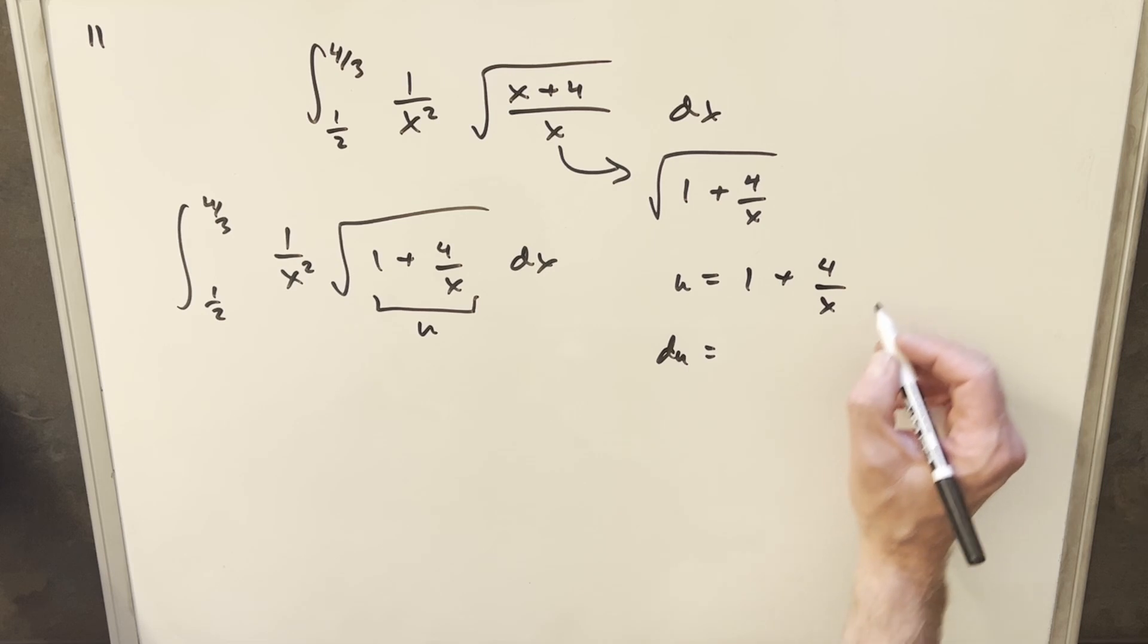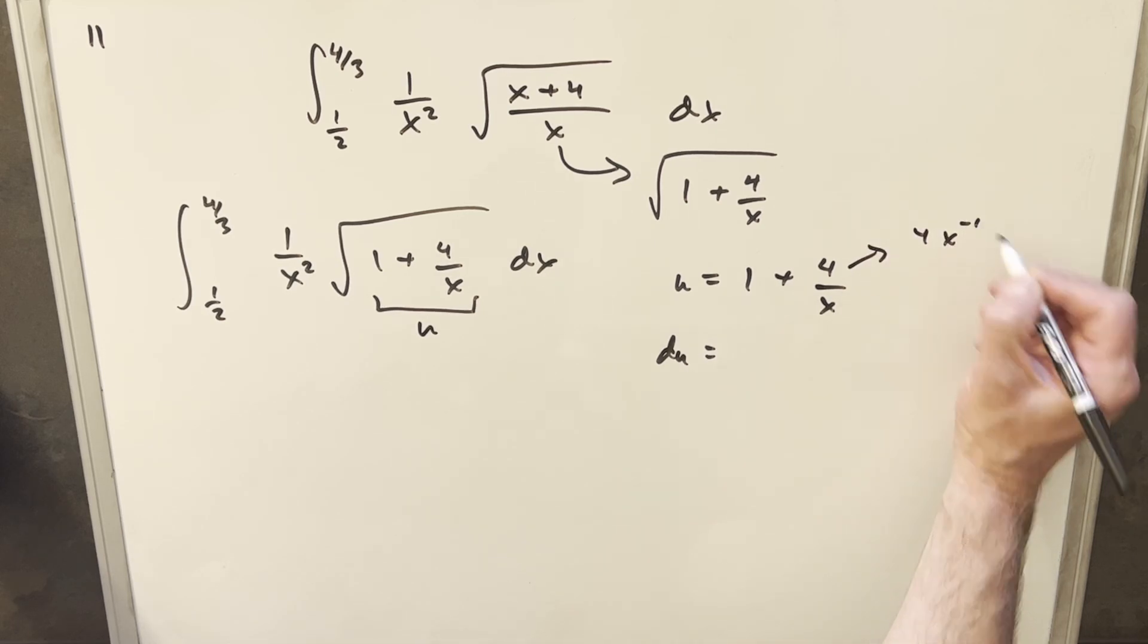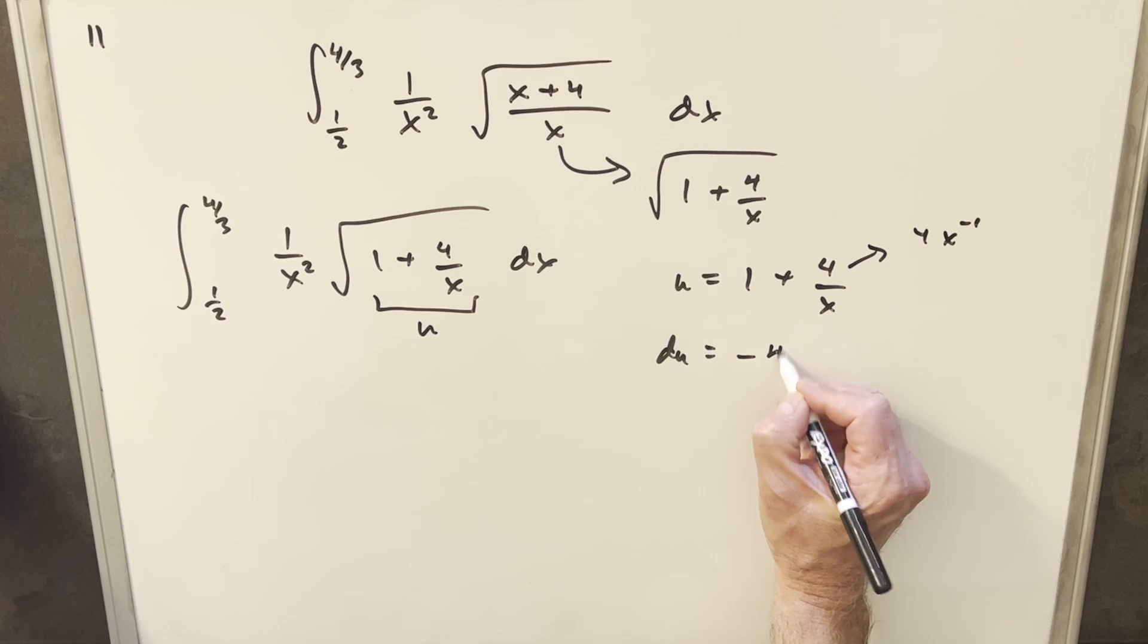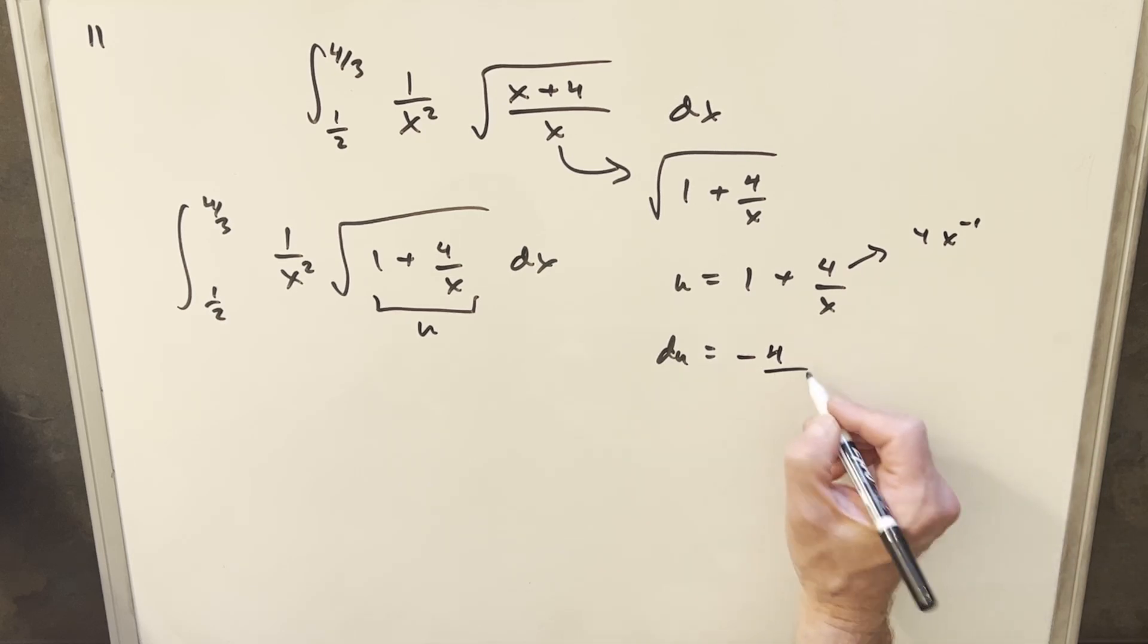Derivative of this is going to be, so if we look at this as 4x to the minus 1, the derivative is going to be minus 4x to the minus 2, but we can write that as minus 4 over x squared dx.